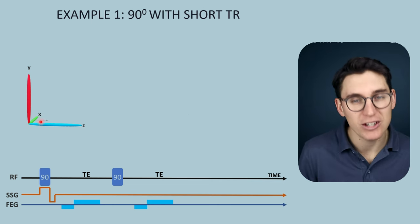The flip angle giving the greatest transverse magnetization for this specific tissue at a specific TR is known as the Ernst angle. For a second tissue with a longer T1 — taking longer to recover longitudinal magnetization but at the same TR — the signal values are different and the Ernst angle would be slightly lower. The flip angle that gives maximum signal is lower because recovery happens more slowly in tissue with longer T1.